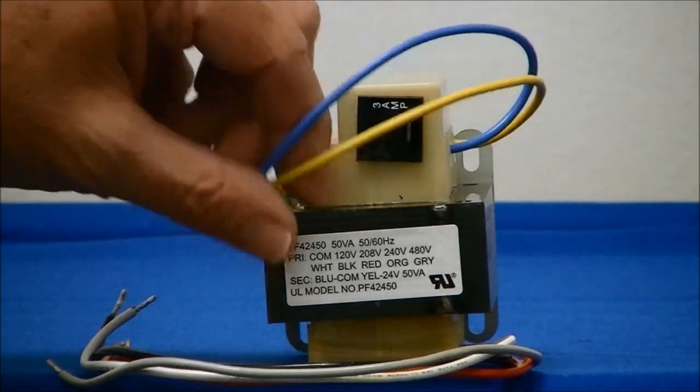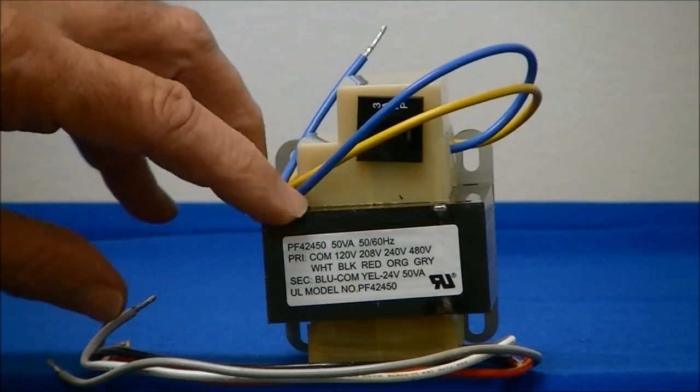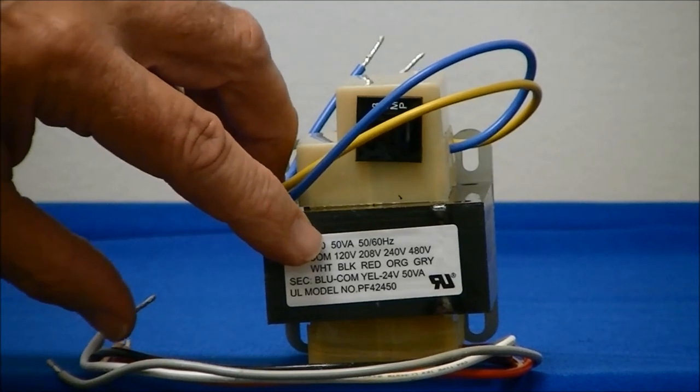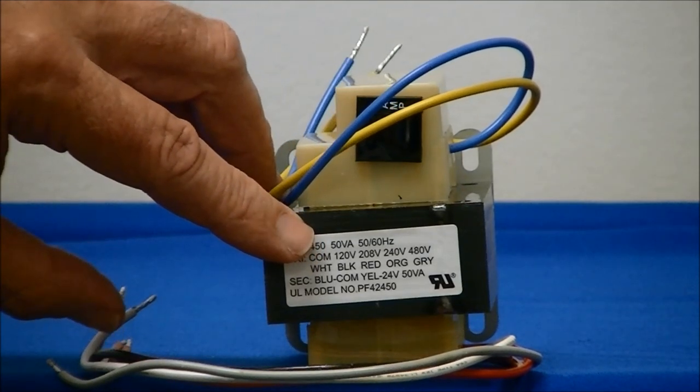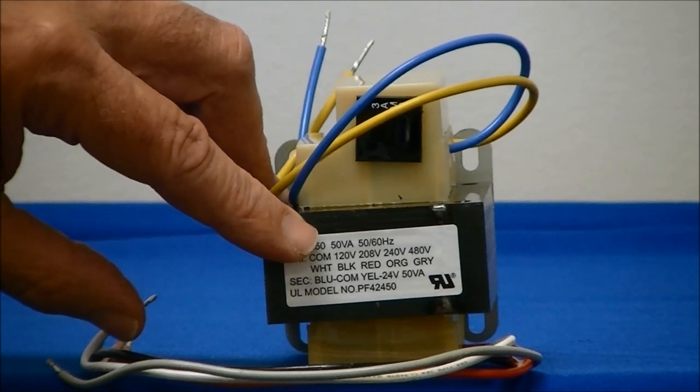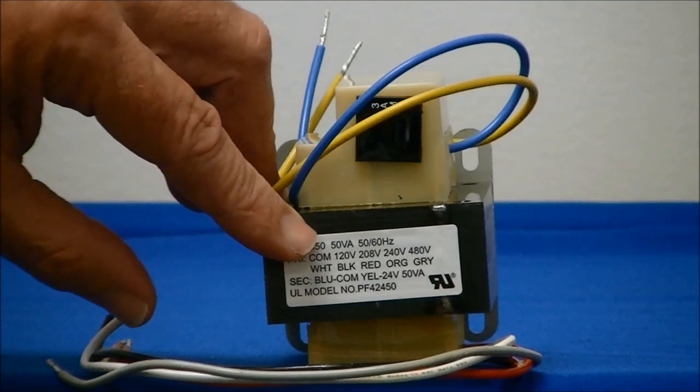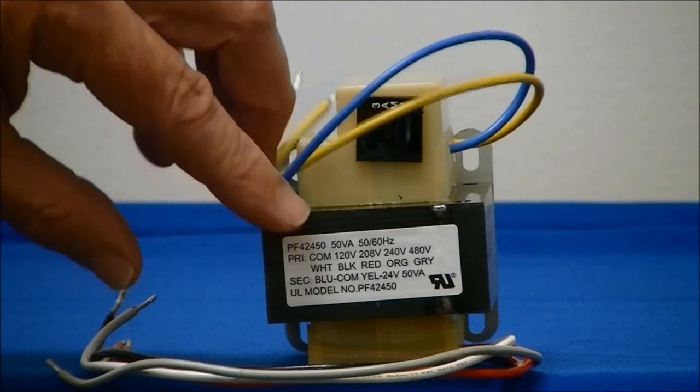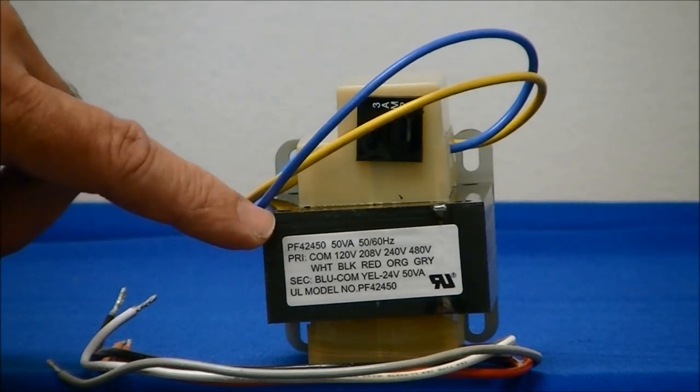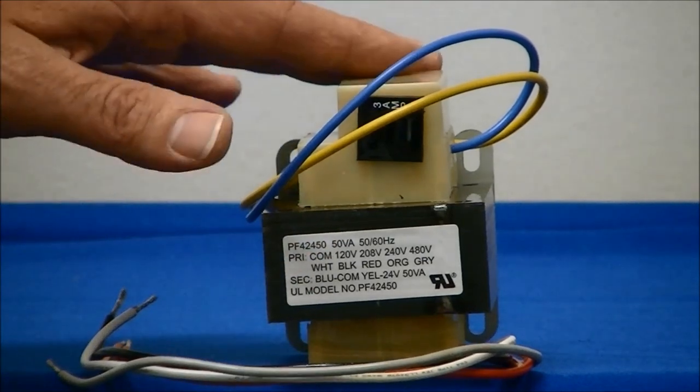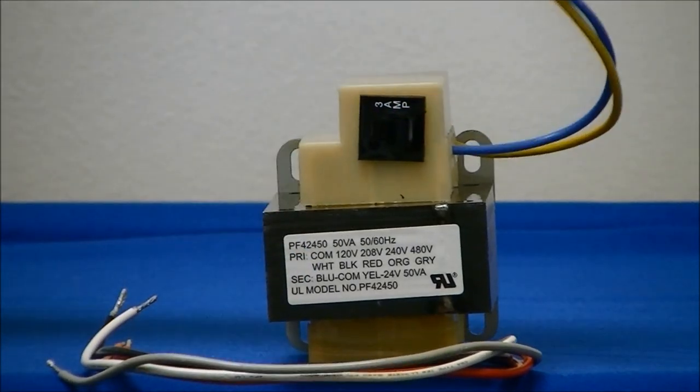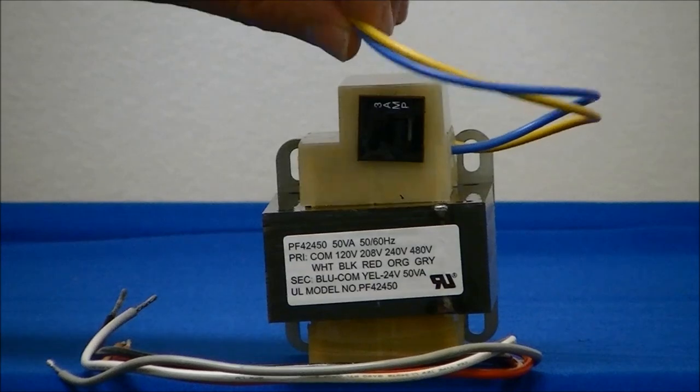On the transformer, this one is classified as a 50 VA transformer. That's 50 volt amps. The first transformer was a 40 volt amp transformer. So in addition to matching the voltages, it's important to match the load that the secondary voltage will be carrying. This particular transformer secondary voltage is 24 volts.